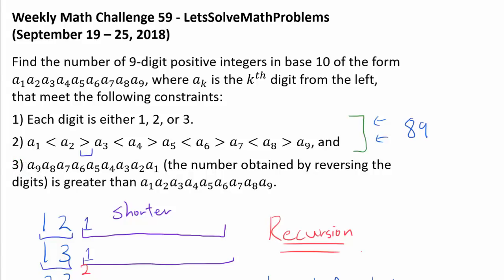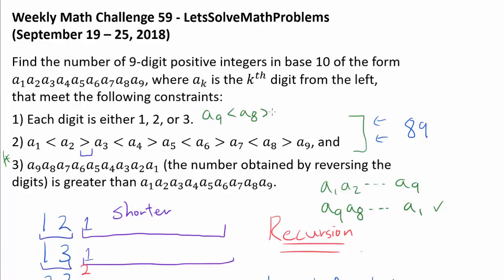Now let's address constraint 3. A key insight: if a1, a2, ..., a9 satisfies the first two constraints, then a9, a8, ..., a1 also satisfies the first two constraints. If the original contains digits 1, 2, or 3, so does the reversal. And flipping the alternating inequalities around, a9 is less than a8, greater than a7, ..., and so a9 down to a1 also satisfies the second constraint. So for every number counted in 89, we also counted its reverse. But 89 is odd, so they can't all pair up perfectly.